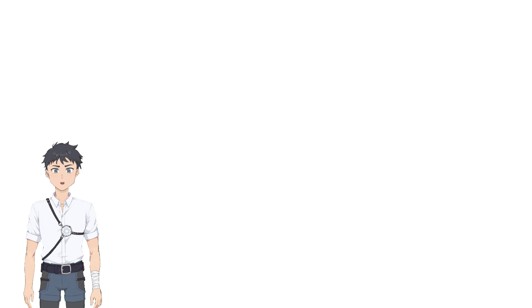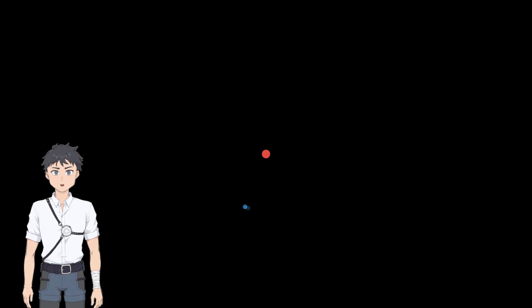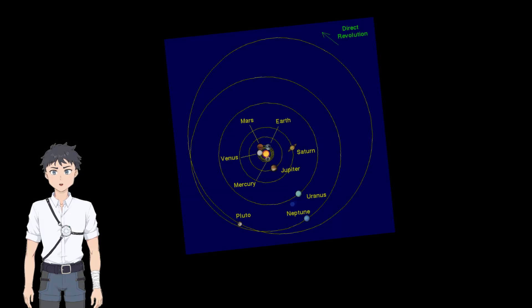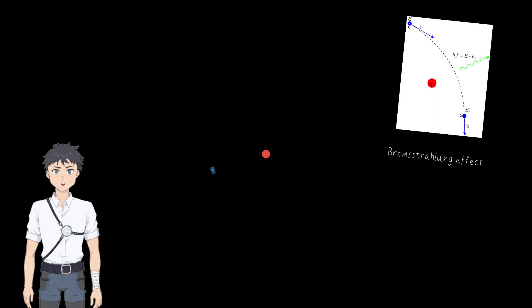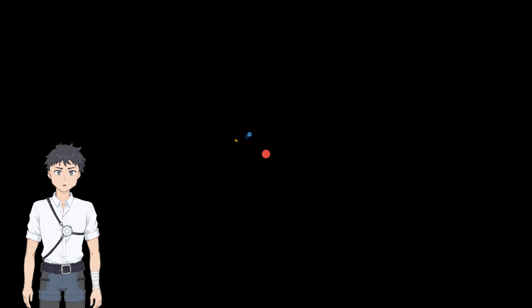Firstly, recall what an atom looks like as you have learned it in school. Negatively charged electrons orbit a positively charged nucleus according to the laws of electromagnetism, just like how planets orbit stars per the laws of gravity. Then we learn that, well actually, this is wrong. Because if it is the case, since electrons experiencing acceleration will emit electromagnetic radiation and lose energy, it will lose more and more energy and finally fall into the nucleus.